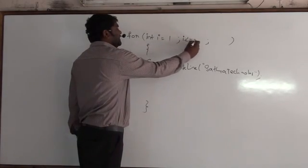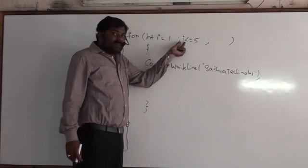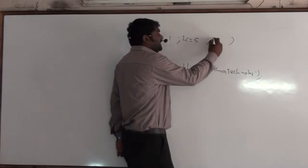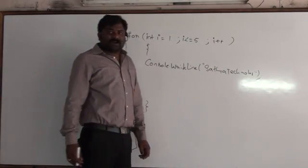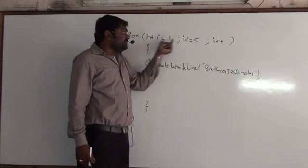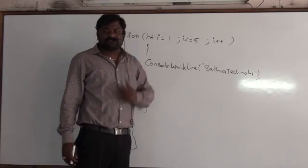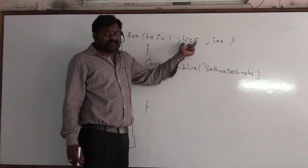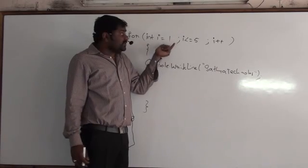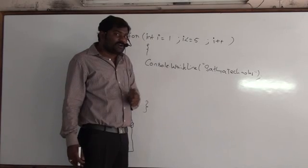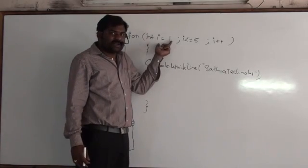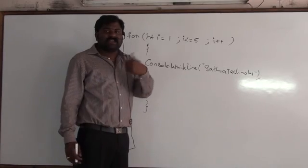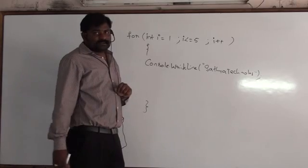Here the condition: i less than or equals to 5. The meaning is, until my initial value becomes 5, I have to update the loop. Then I want to increment the value, because I want to increase it. Many people get confused here — why am I writing 1 here and 5 here? I want to rotate the loop five times, so I write 1 to 5.